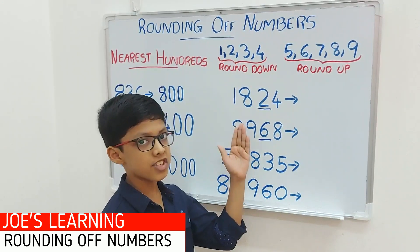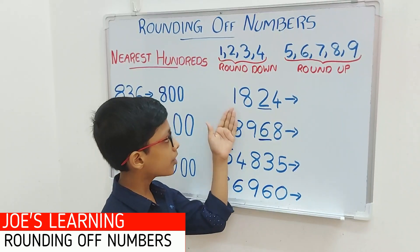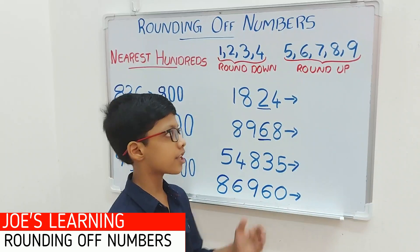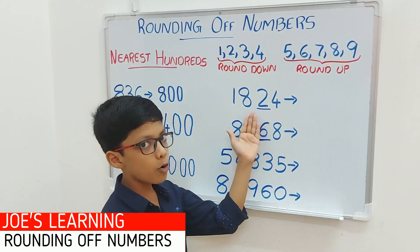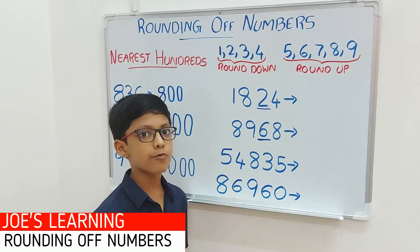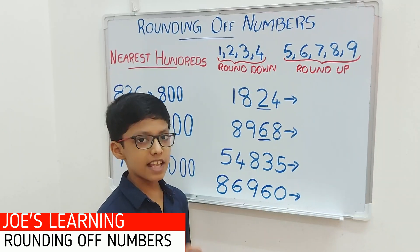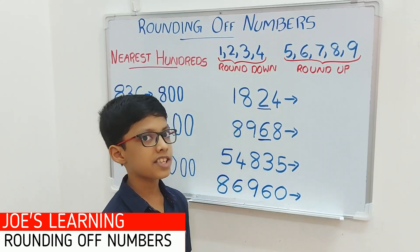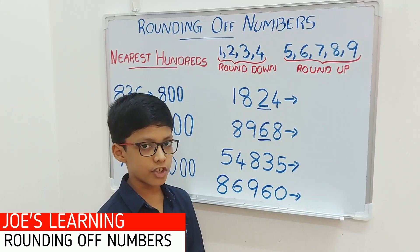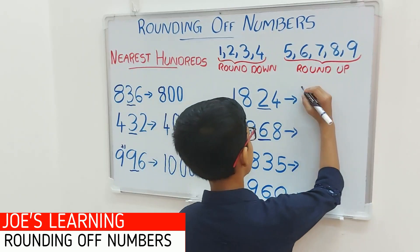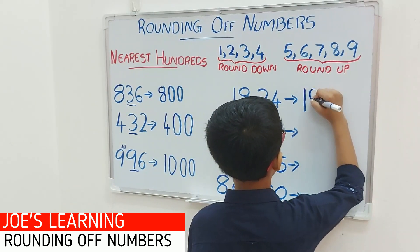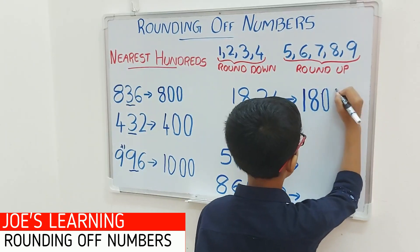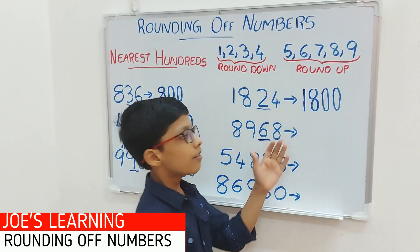Now let's take a look at this example, that is 1824. First you have to look at the digit in the tens space — 2 is in the tens space. We compare it with 5: 2 is lesser than 5. So we have to put a 0 in the ones and tens space, leaving the rest of the digits as it is. So 1824 rounded off to its nearest hundreds equals 1800.